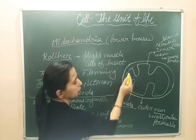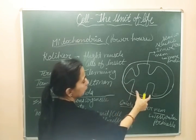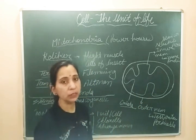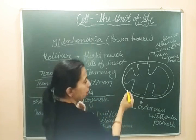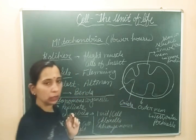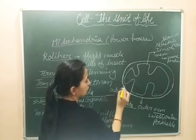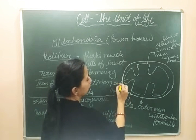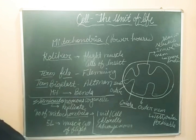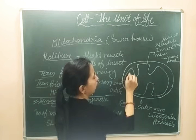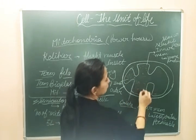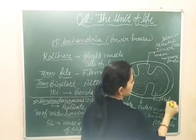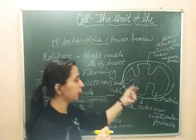The space between the two membranes is the outer compartment. The inner compartment, enclosed within the inner membrane, is filled with a substance called the matrix. The complete portion present inside the inner membrane is known as the matrix.